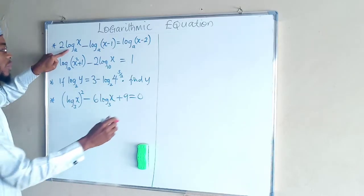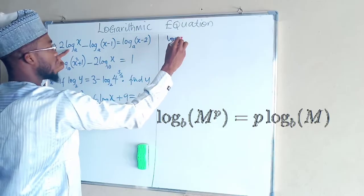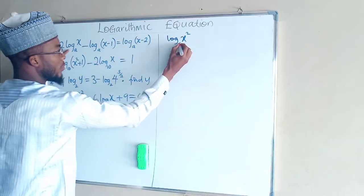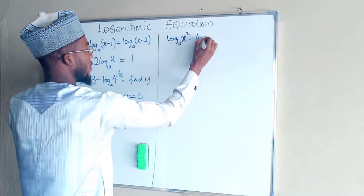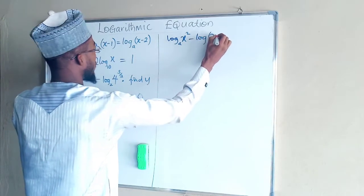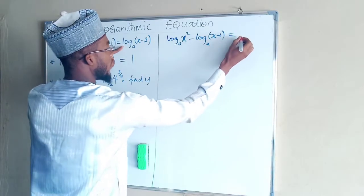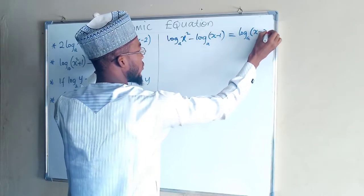For laws of logarithms, this can be transformed to log of x power 2. The first term is here and this remains the same. Log of x minus 1 equals log of x minus 2.